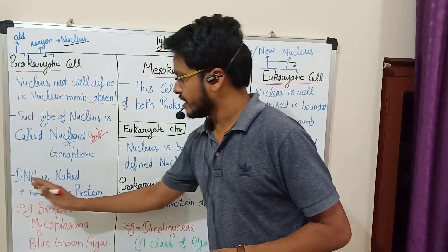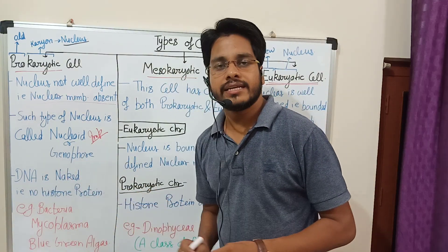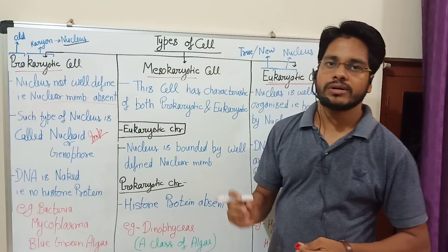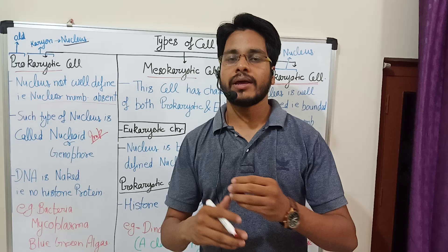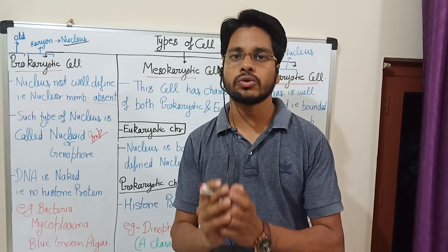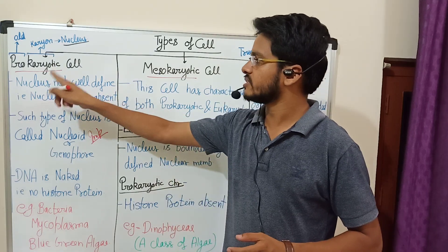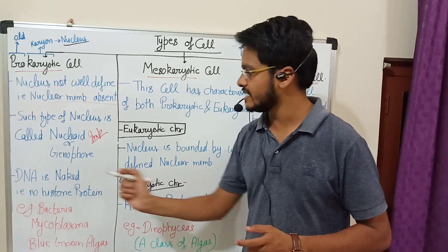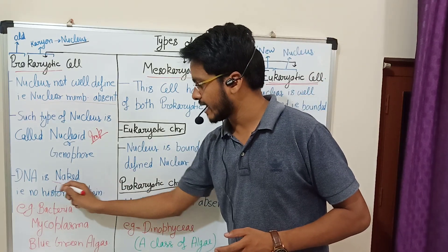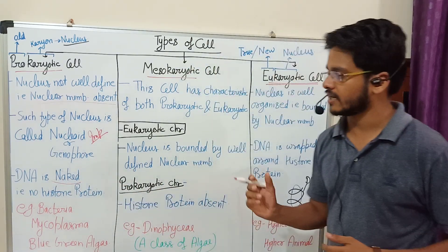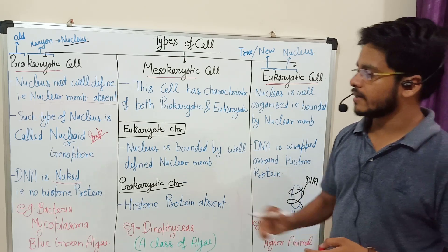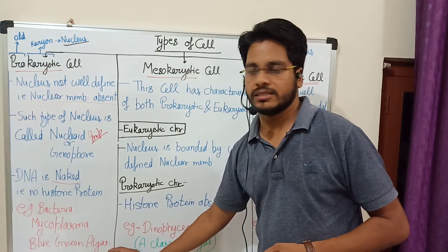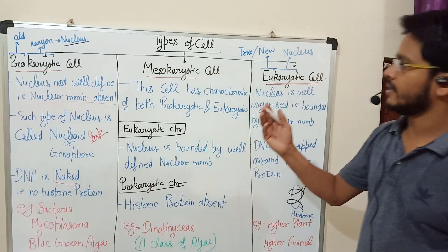In prokaryotic cells, DNA is naked — that is, there is no histone protein. We know that DNA is normally wrapped around histone protein, but in prokaryotic cells there is no histone protein, so the DNA is naked. Examples of prokaryotic cells are bacteria, mycoplasma, and blue-green algae.